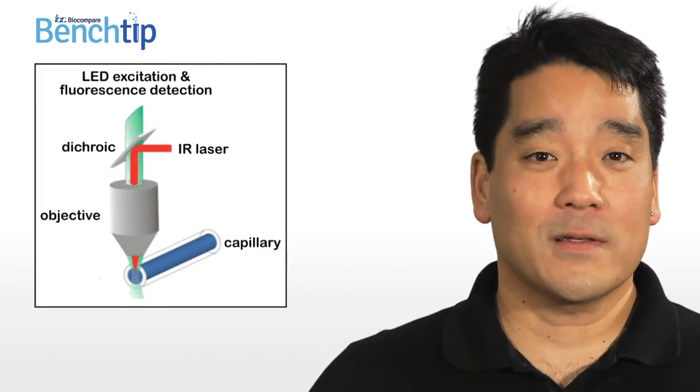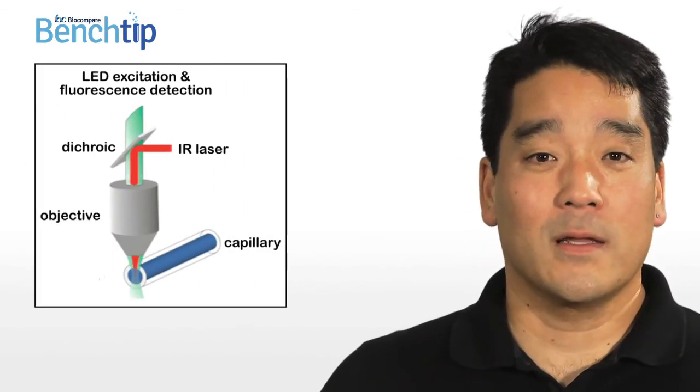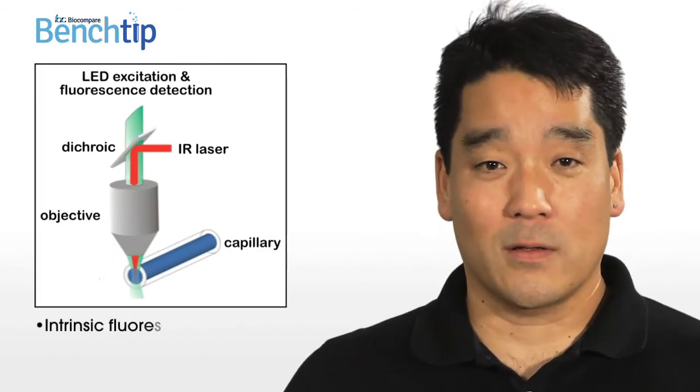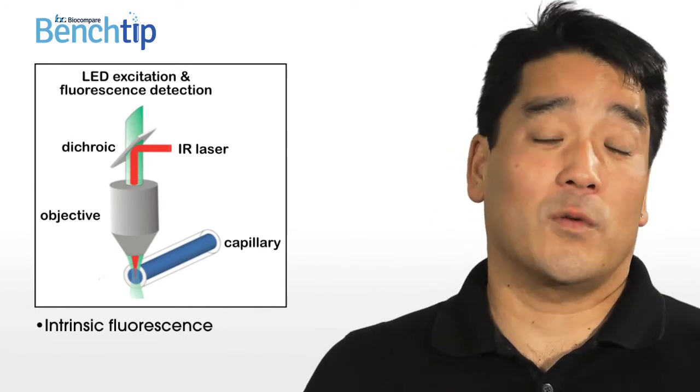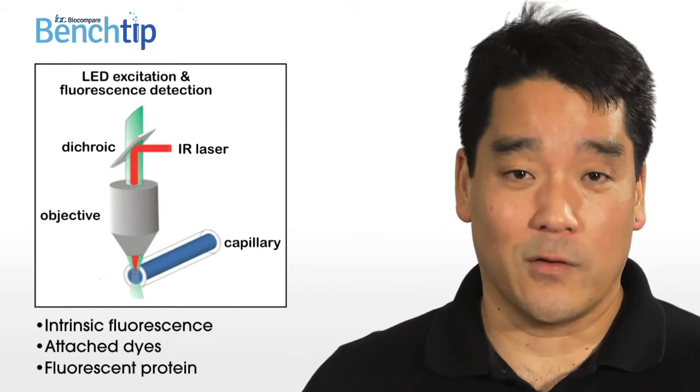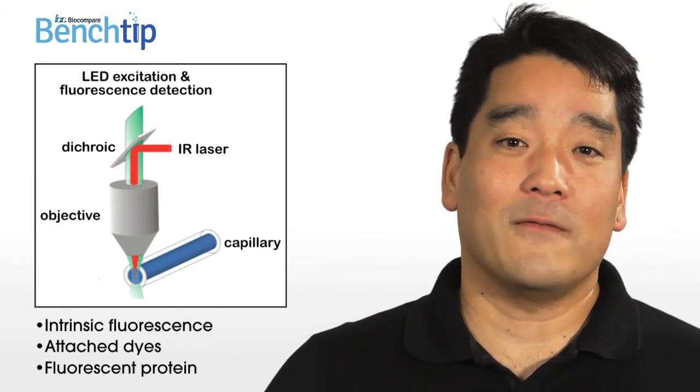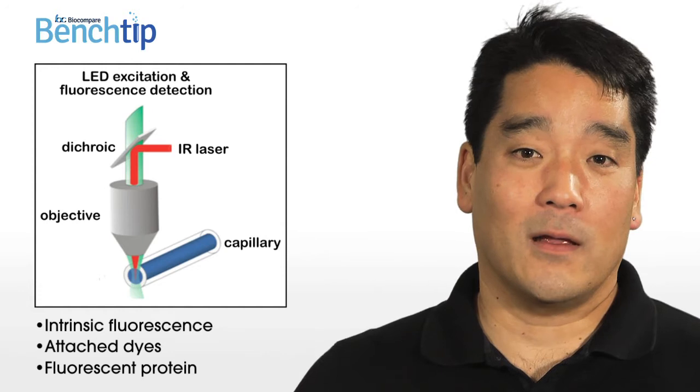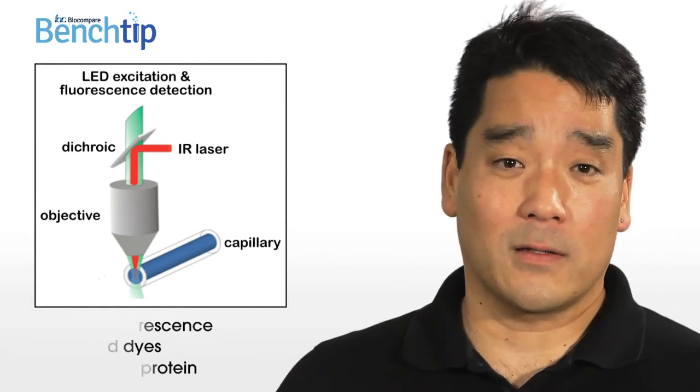MST uses fluorescence to follow the movement of the molecules. This fluorescence can either be intrinsic to the molecule by measuring the fluorescence of tryptophan residues, for instance, or it can be an attached dye or fluorescent protein such as GFP. This makes MST very sensitive and accurate, and even label-free in cases of intrinsic fluorescence.